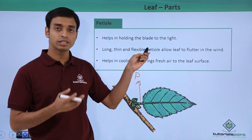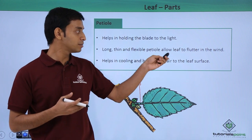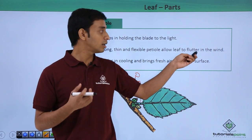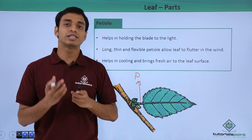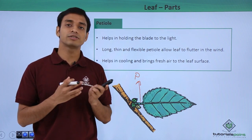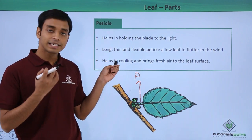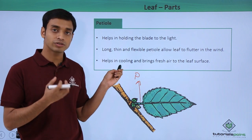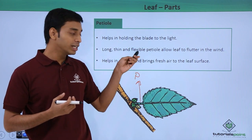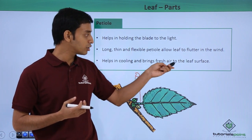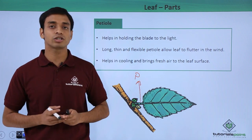The petiole or leaf stalk exposes the leaf structure towards sunlight. These are long, thin, and flexible in nature. This flexible, long, thin nature of the petiole helps in fluttering the leaf in the wind. Because of this movement or flexibility, it keeps the leaves cool due to the fluttering in the wind and also brings fresh air to the leaf surface.